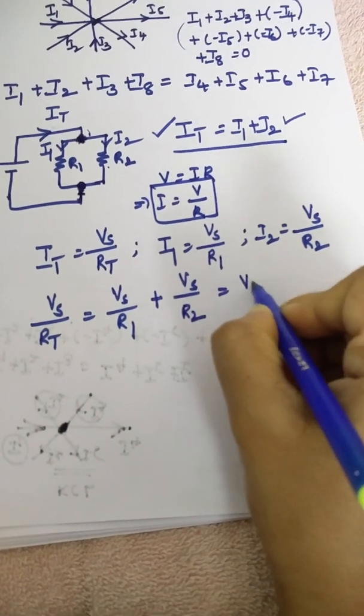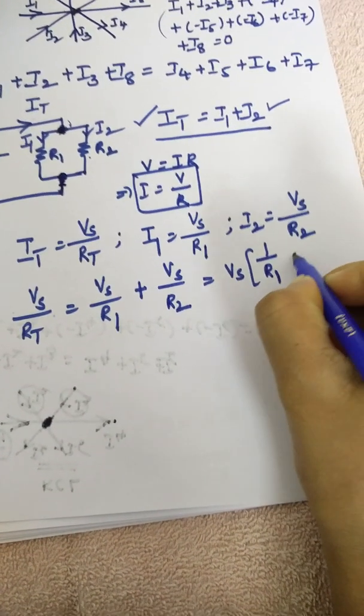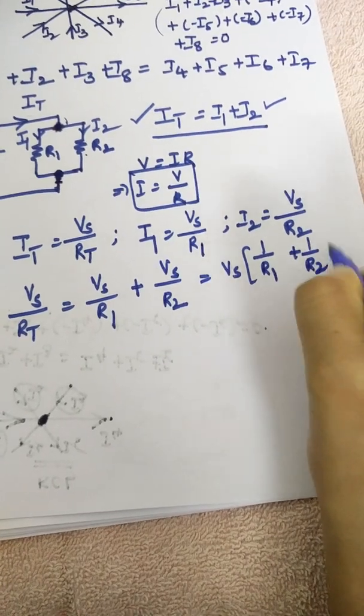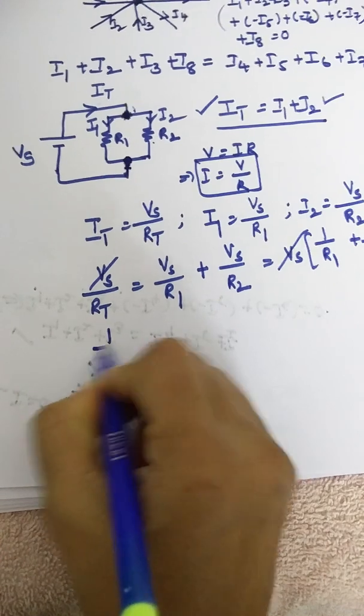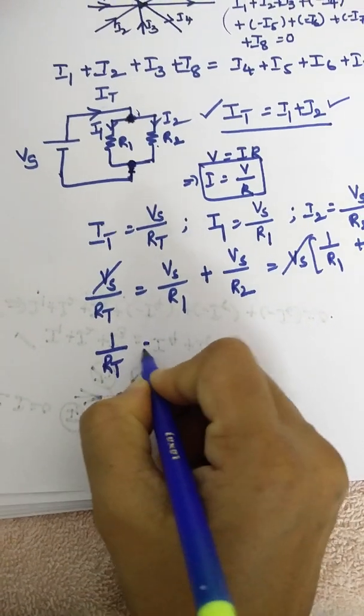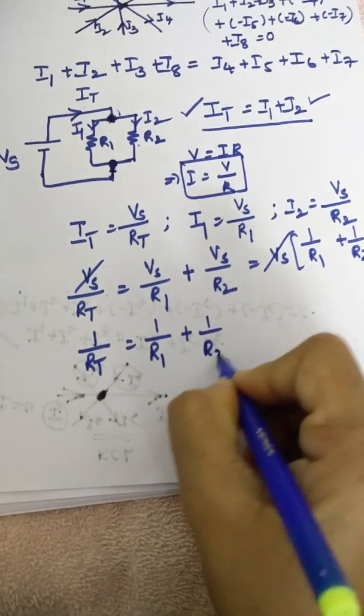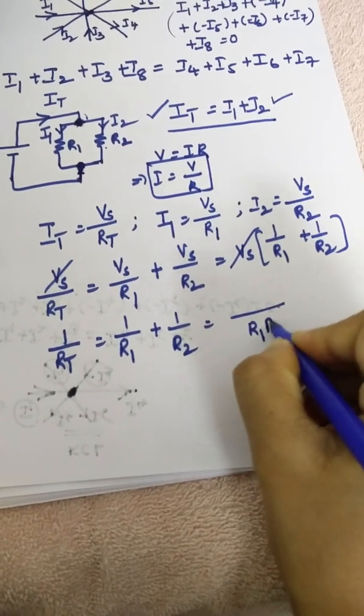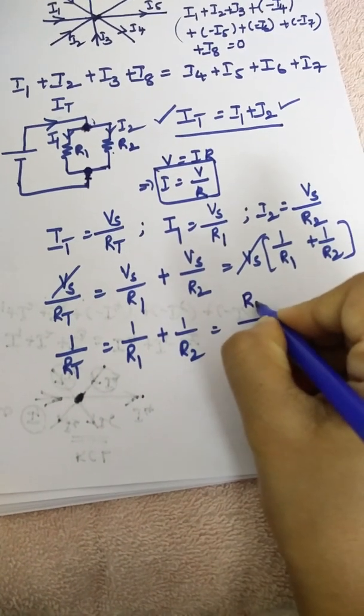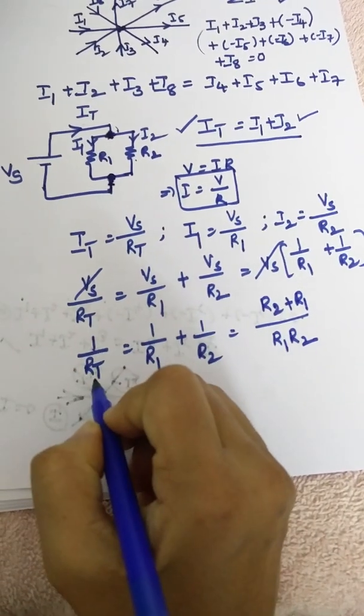From this relation, you can take Vs as common. There you get 1 by R1 plus 1 by R2. So Vs gets cancelled. What is the formula? 1 by Rt is equal to 1 by R1 plus 1 by R2. Take LCM. So this is R1, R2. In the numerator you will be getting R2 plus R1.